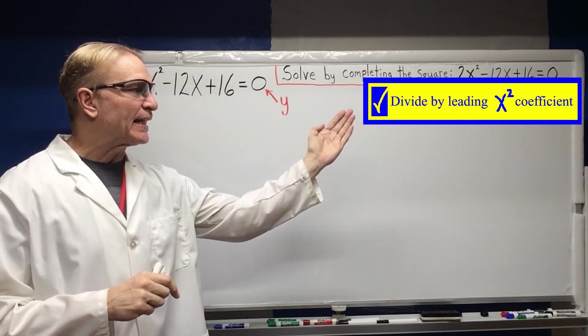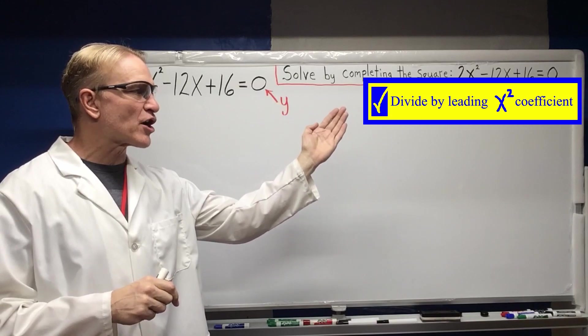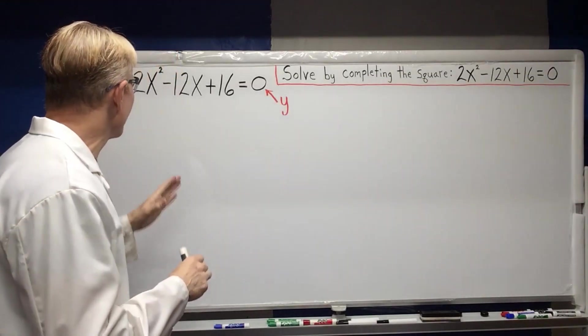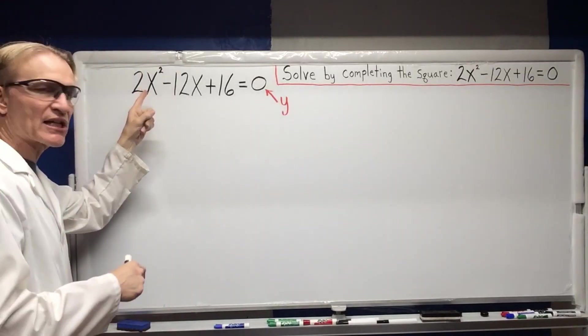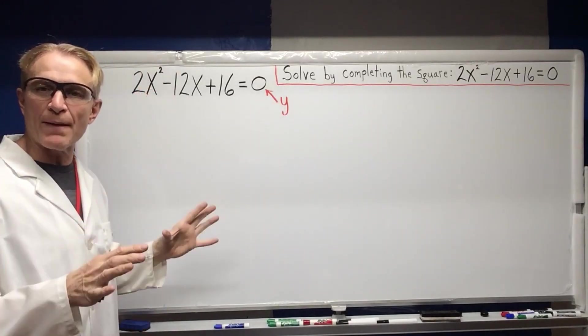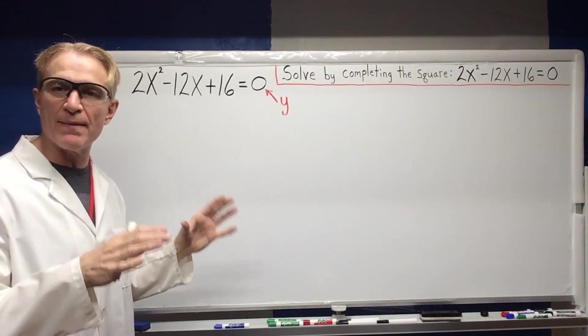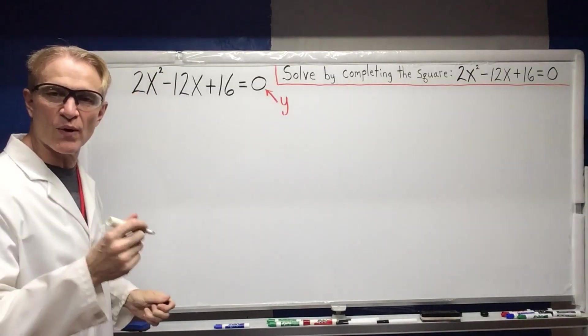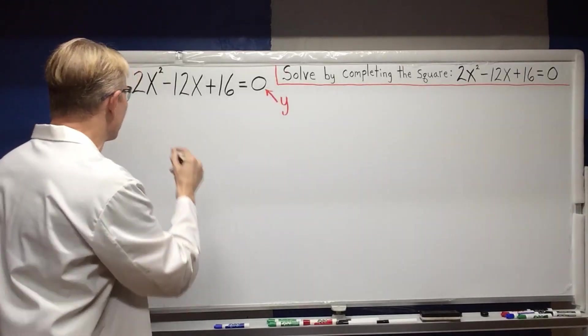Divide by leading X squared coefficient. The reason that we divide by the X squared coefficient is so that this will be X squared by itself, representing a one unit by one unit square. So since there's a two in front of the X squared, we're going to divide everything by two.